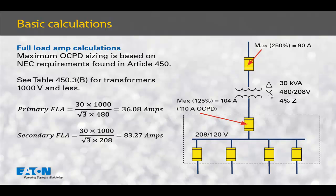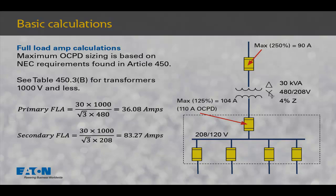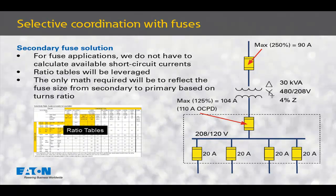Table 240.6a from National Electrical Code version 2017 is your reference. This gives you the standard ampere ratings for fuses and inverse time circuit breakers. For fuse applications, we do not have to calculate short-circuit currents. We know we are not going to exceed the 200,000 amp interrupting rating of the fuse, and selective coordination with fuses relies solely on ratio tables.